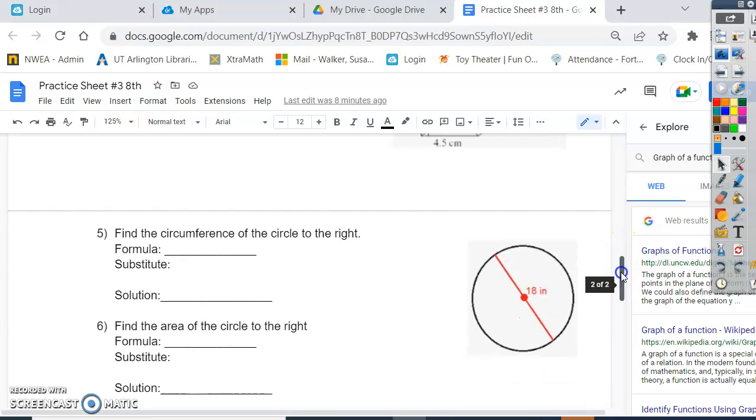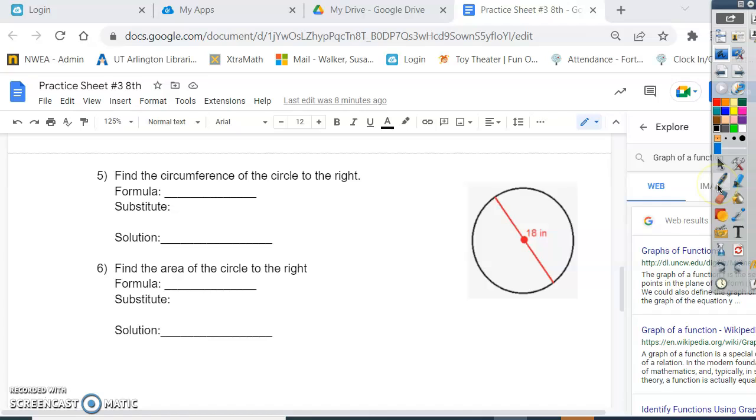Now, almost done, you can also use the calculator for this one. You do need the formula chart, so circumference towards the top, C equals, I don't know which one to use. Well, this is diameter, so I'm going to use pi D. Now, you can, I'm just going to, for this sake, put in 3.14, and the diameter is 18, but if you have the calculator, you can use the pi button to multiply that out.